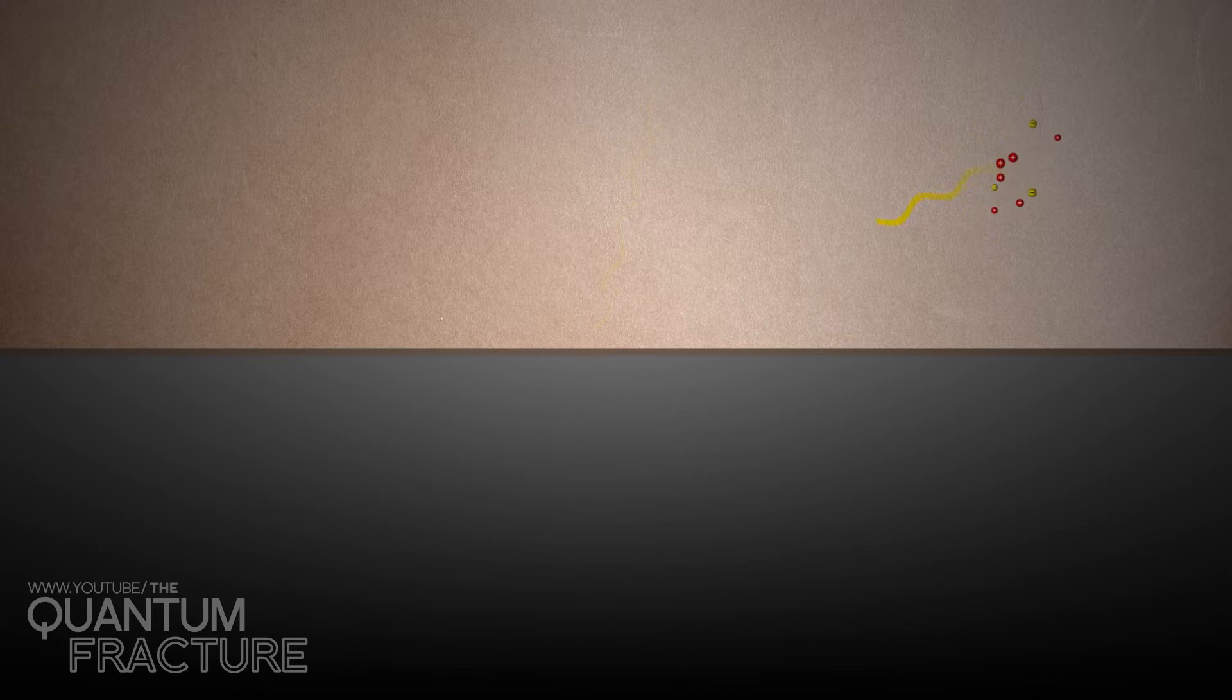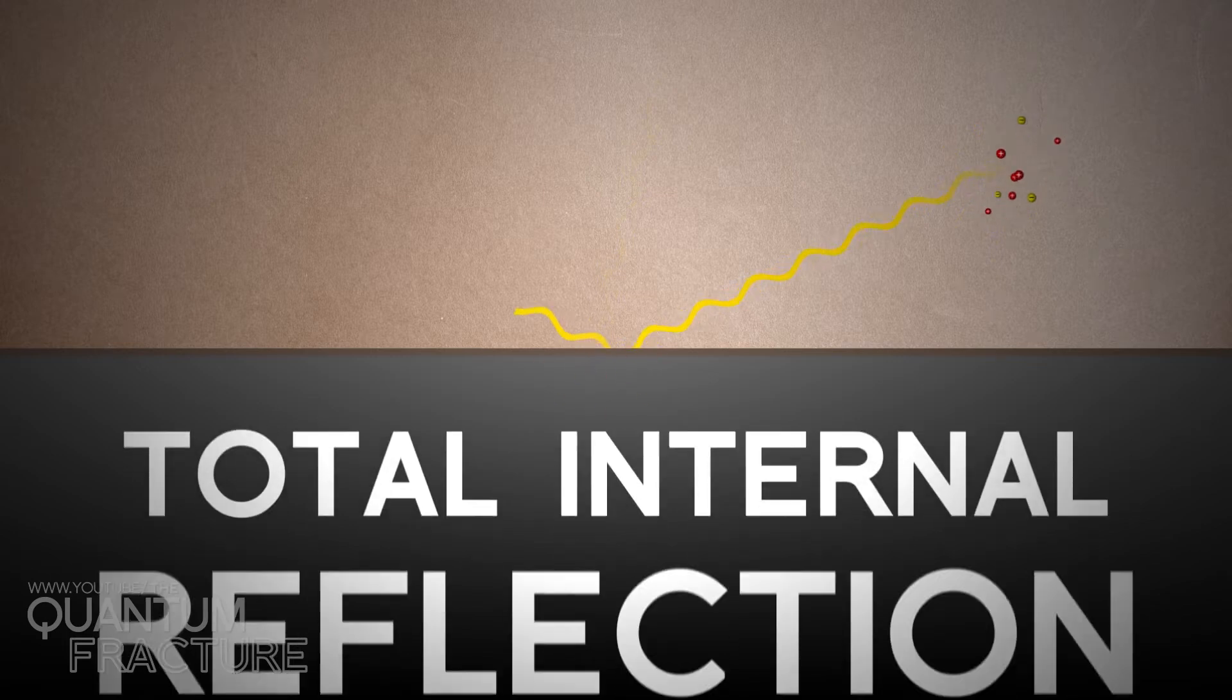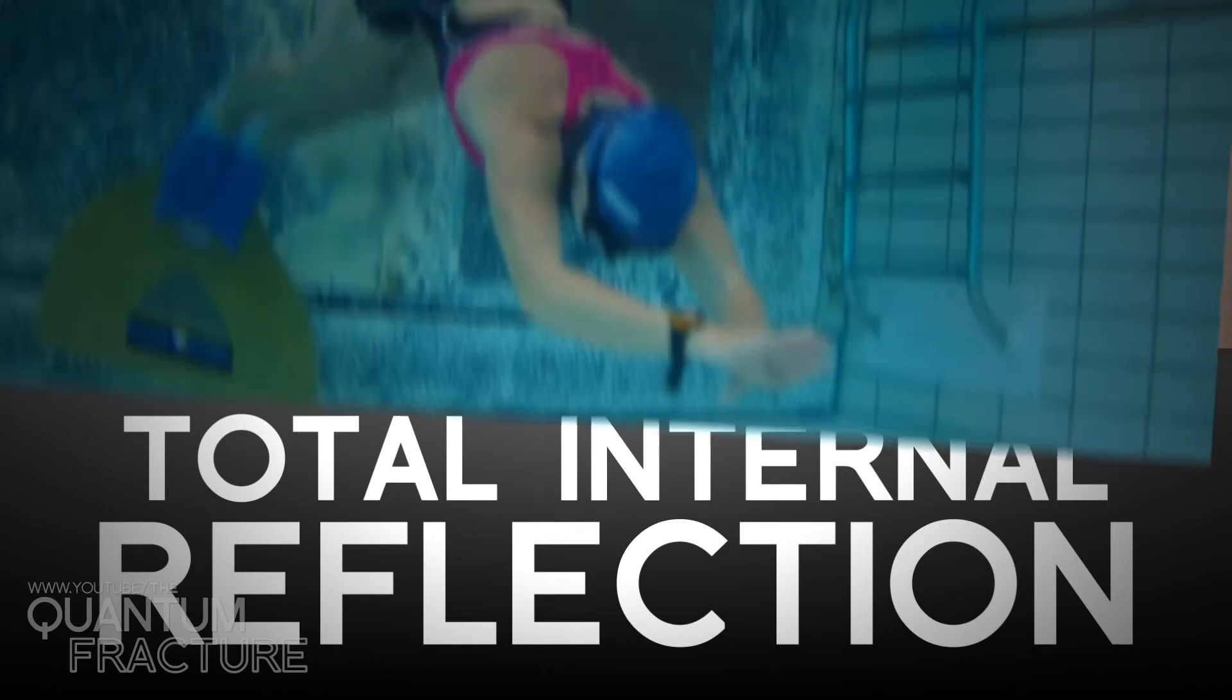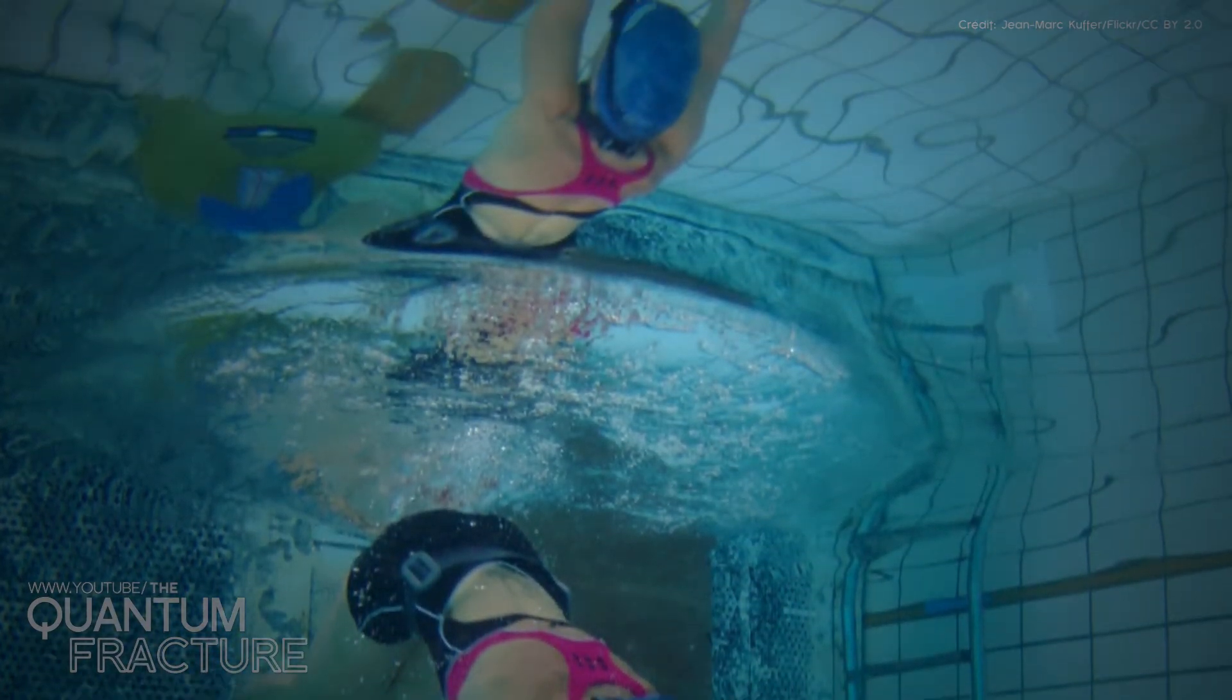But if its path is oblique enough, we encounter a phenomenon known as total internal reflection. The wave bounces off the interphase as if it were a mirror, and we don't see it. You may have experienced this phenomenon from the bottom of a pool.